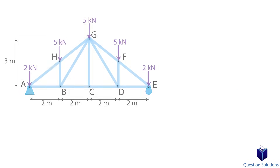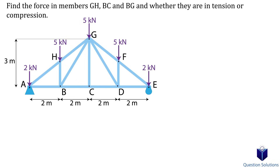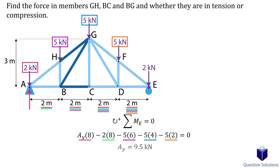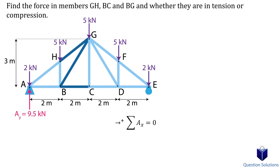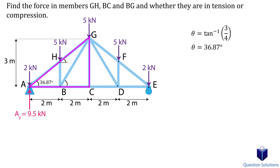Let's take a look at this problem where we need to find the forces in members GH, BC, and BG. Since all the unknowns are on the left side, we need to figure out the reactions at pin A. We write a moment equation about point E, which allows us to directly solve for the vertical reaction. There won't be an x-reaction at pin A since there are no horizontal forces. We also quickly figure out the relevant angles using the inverse tangent.